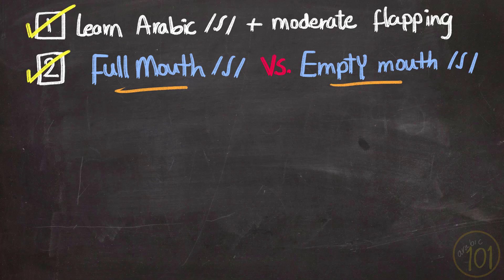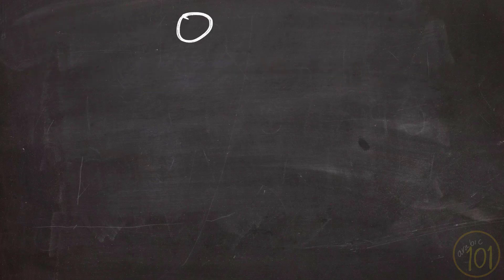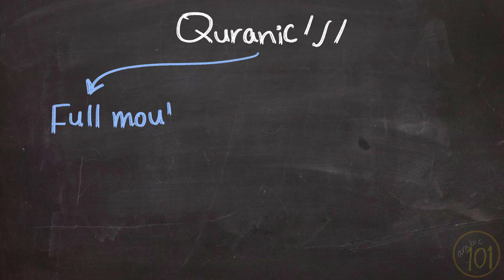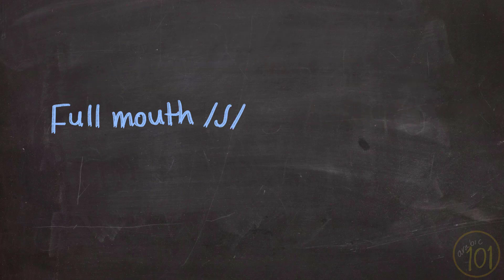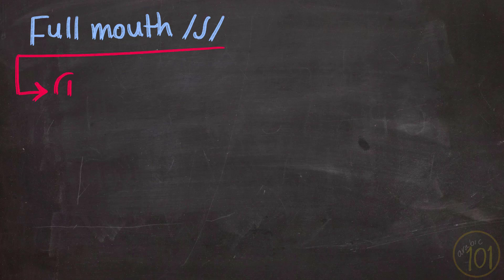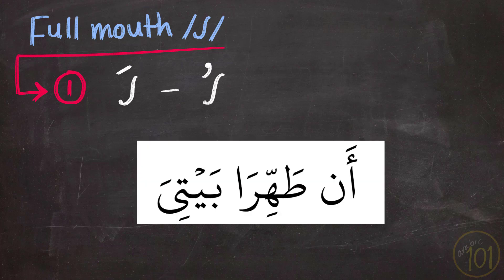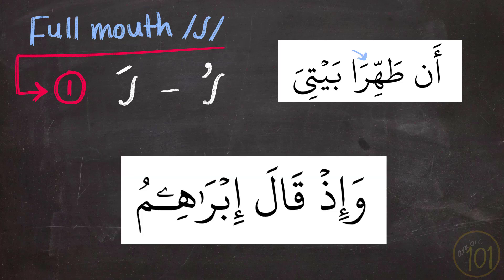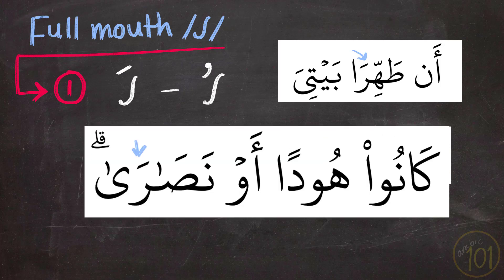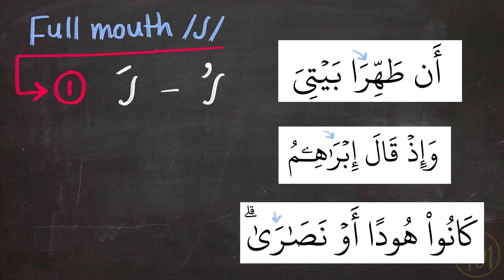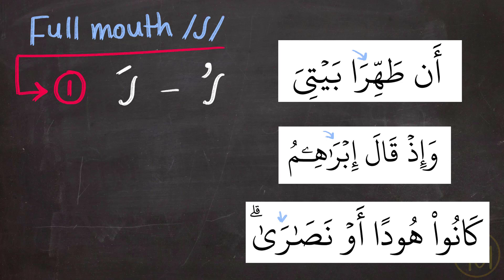Once you get these two concepts, it would be much easier for you to apply the rules of Ra and fine-tune your reading of the Holy Quran. So Ra in the Holy Quran is either full mouth or empty mouth. It is pronounced as full mouth Ra in two cases. The first is if the Ra has Fathah or Dhamma on top of it, like in these examples. As you can see in all of these examples, the Ra was a full mouth letter.